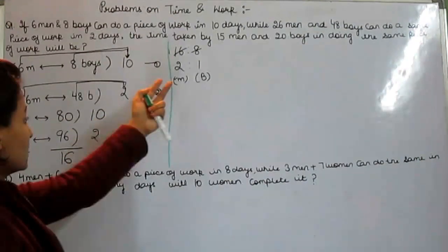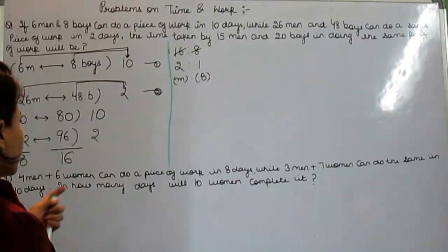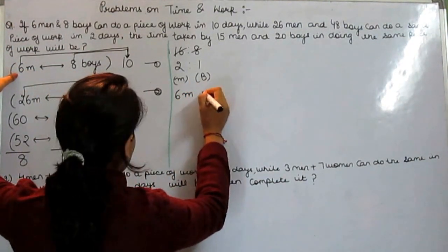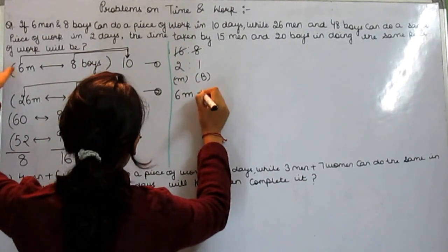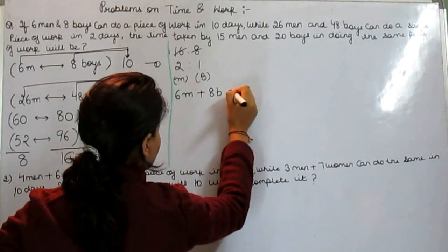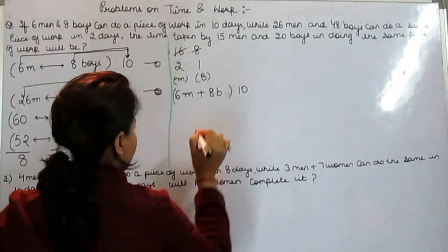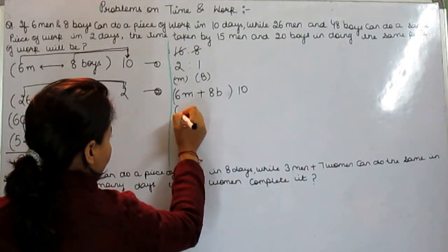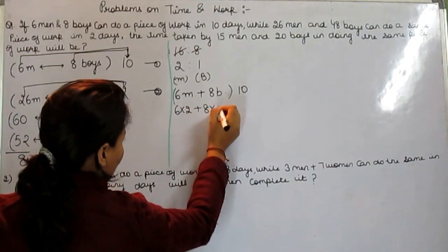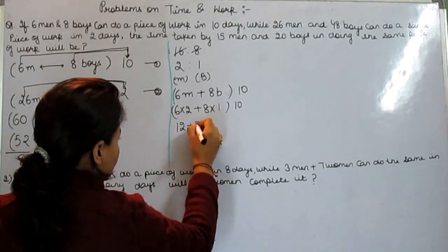Now put these ratios in any of the equations. Let's put this ratio in first equation. First equation was 6 men plus 8 boys did a piece of work in 10 days. This will be like this: 6 men, what is the ratio of men? That is 2 plus the ratio of boys 1.